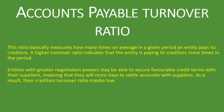Entities with greater negotiation powers may be able to secure favorable credit terms with their suppliers, meaning they will have more days to settle accounts with suppliers. As a result, their creditors turnover ratio may be low. A high creditors turnover ratio indicates that the entity is paying their creditors more times in a given period, usually within one year. It means they are paying more often, which can look favorable to potential suppliers and investors. But if an entity negotiates well with its creditors, it may be able to secure a longer credit period, meaning it will only have to pay a few times per year. You need to take note of that when analyzing such a ratio.